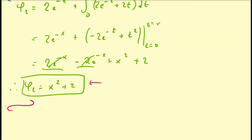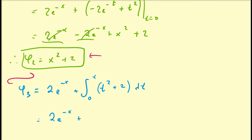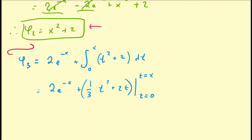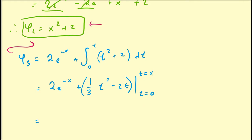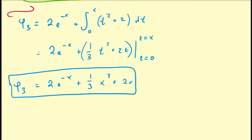Let's calculate φ₃. φ₃ equals 2e^{-x} plus the integral from 0 to x of φ₂(t) dt, which is the integral of t² plus 2 with respect to t. Evaluating gives 2e^{-x} plus (1/3)t³ plus 2t, evaluated from 0 to x. Plugging in x gives 2e^{-x} plus (1/3)x³ plus 2x, and plugging 0 into the polynomial gives 0. So φ₃ equals 2e^{-x} plus (1/3)x³ plus 2x. Notice this is again an exponential-polynomial, similar to φ₁.